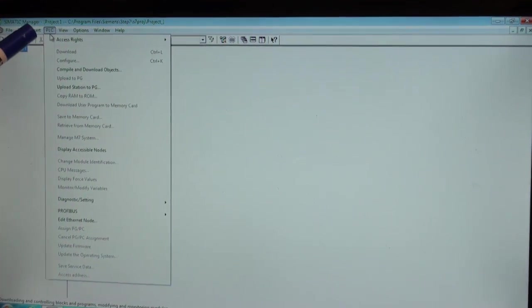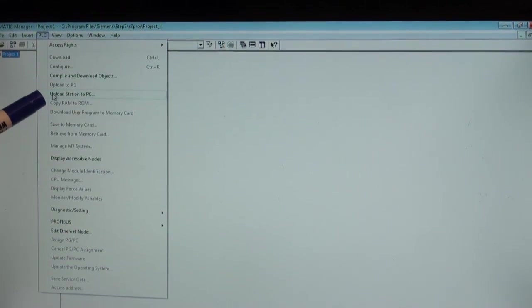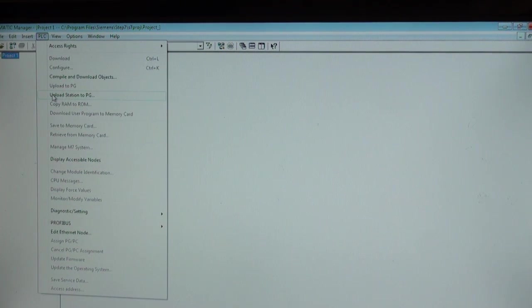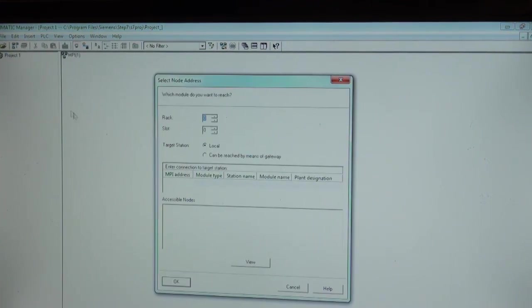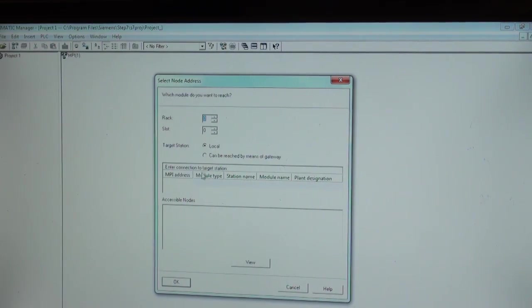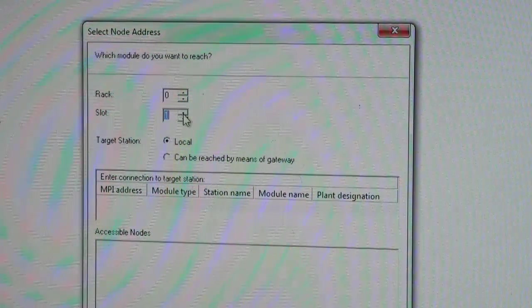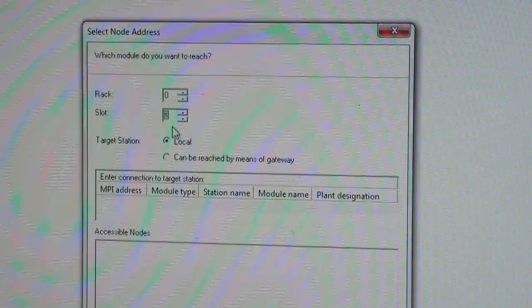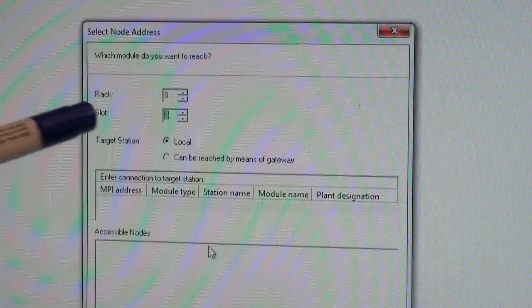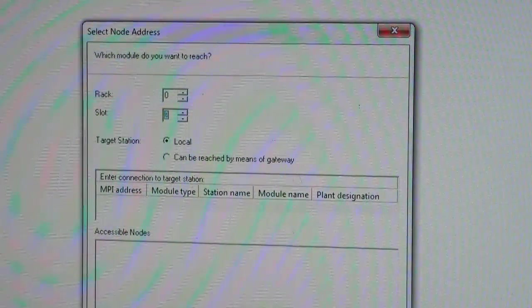For that we have an option inside PLC called upload station to PG. Just click on upload station to PG. It asks for the slot number where the CPU is connected. CPU is connected to slot number 2. Hence we will be giving slot number 2 and then view the details.